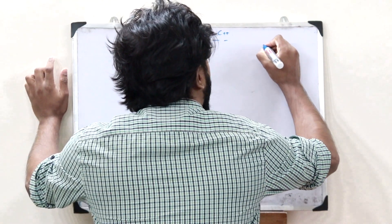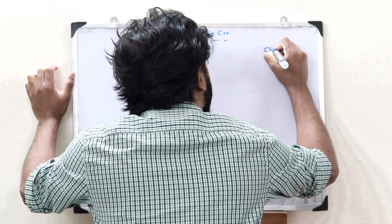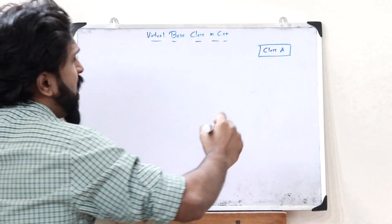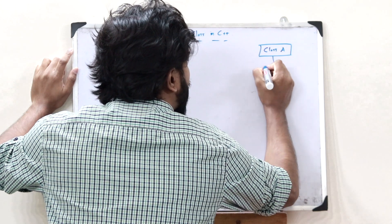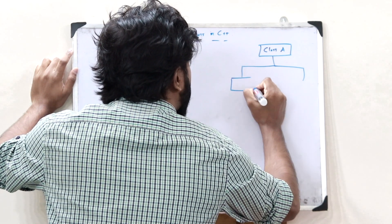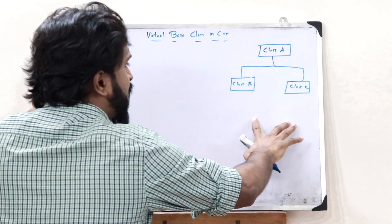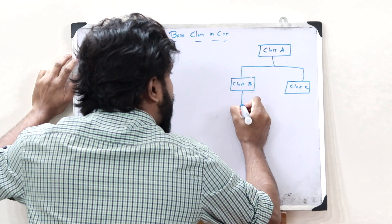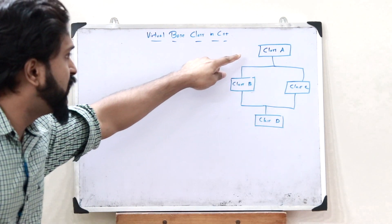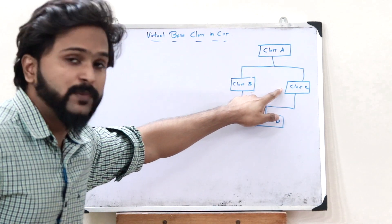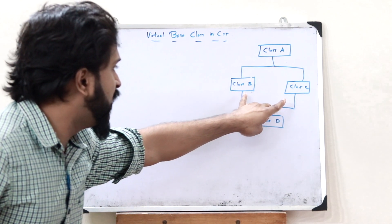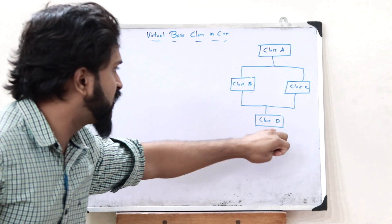Let us consider a particular base class A. Now let us derive two sub classes from this base class — class B and class C. And from these two classes, let us derive another single class, class D. So from class A we have derived two sub classes B and C, and from these two sub classes we have again derived a single class, class D.